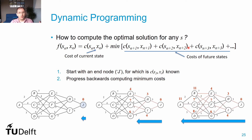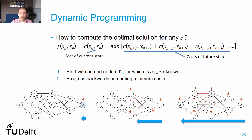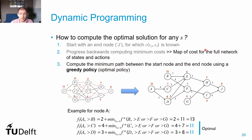Since we don't know future costs from the current stage, the traditional approach is to start from the end and work backwards. Node J has a cost of 0. Moving backwards: node H costs 3, node I costs 4. For node F, the options are 3+6=9 or 4+3=7, so the minimum cost for F is 7, with path F→I→J. We continue this for all nodes until reaching A, building a full cost map of the network.